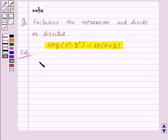We have to divide the expression 5pq into p square minus q square by 2p into p plus q.